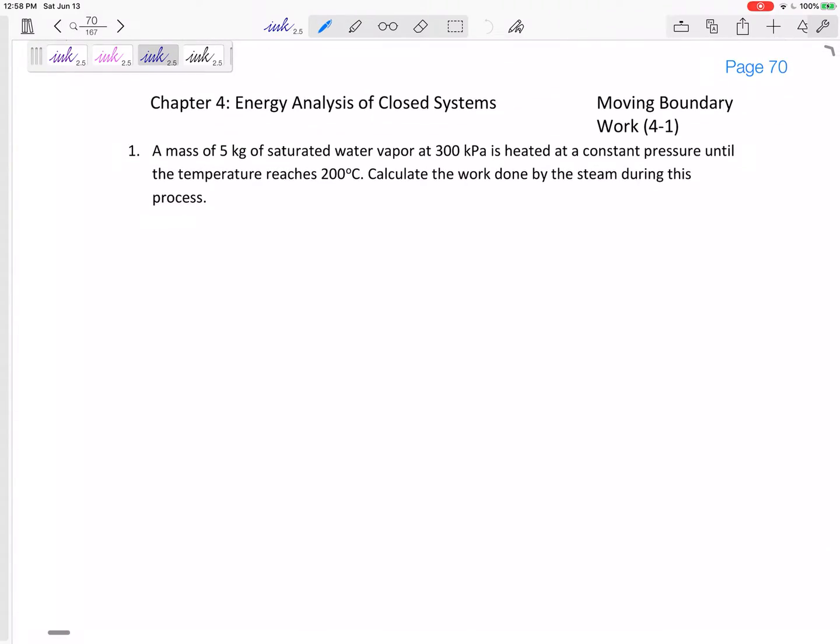We've got a mass of 5 kilograms of saturated water vapor at 300 kPa. It's heated at constant pressure until the temperature reaches 200°C. This is a constant pressure process. Calculate the work done by the steam. The boundary work equation for constant pressure is pressure times change in volume.